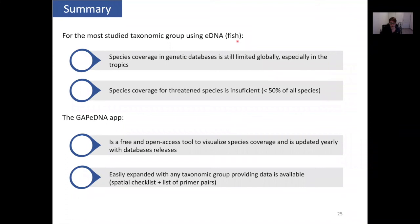In summary, for the most studied taxonomic group using eDNA, fishes, we can see that species coverage in genetic databases is rather limited, especially for the tropics, even though there are the most species present in the tropics. We can see also that species coverage for threatened species is largely insufficient. We have less than 50% of all fish species present in our reference database at the moment. The GAPiDNA app is a free and open access tool which can help visualize species coverage and is updated yearly with the database releases. It's also easily expanded with any taxonomic group if the data is available.